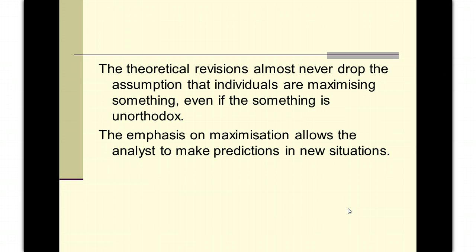In other social sciences they might try to explain, understand, and analyse preferences — really get to the heart of why somebody is making a particular decision. In economics, we generally take the preferences as given and assume that people are making themselves as well off as possible. The emphasis on maximisation allows the analyst to make predictions in new situations: if we know what the person is trying to do and the situation changes, we can see how they will respond.